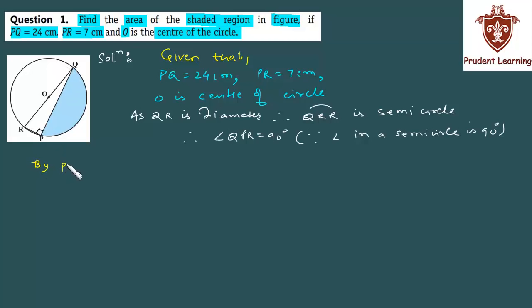So, by Pythagoras theorem, we can write QR squared, which is the hypotenuse of the triangle, equals the sum of PQ squared and PR squared. Now, substituting the values, we have QR squared equals PQ is 24, 24 squared, plus PR is 7, 7 squared. Which gives us QR squared as 24 squared is 576 plus 7 squared is 49.